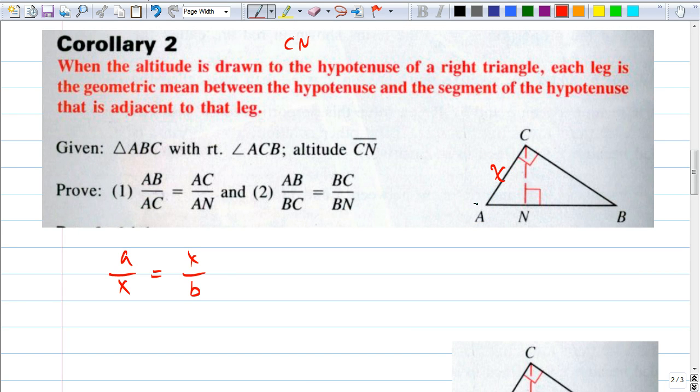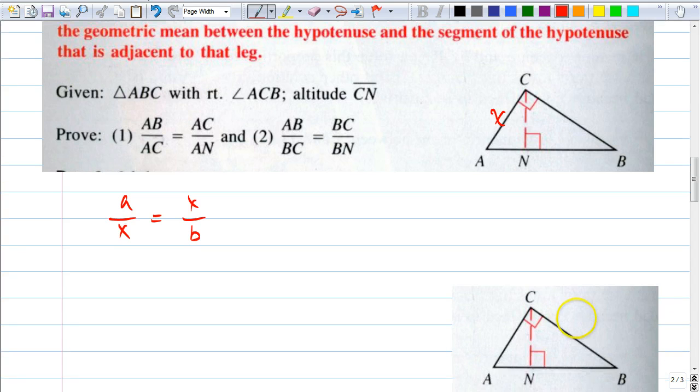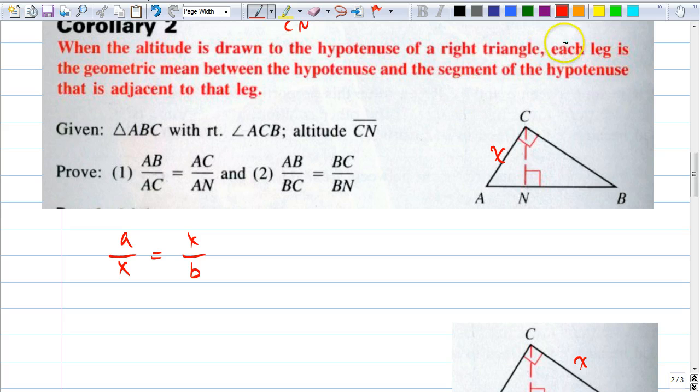Because each of these legs. So that could be your X, or this could be your X, right? Remember? Yes. It says that each leg is the geometric mean. Let's do it with AC first. If AC is the geometric mean, this is the geometric mean between what? How about, who remembers, Aquila?